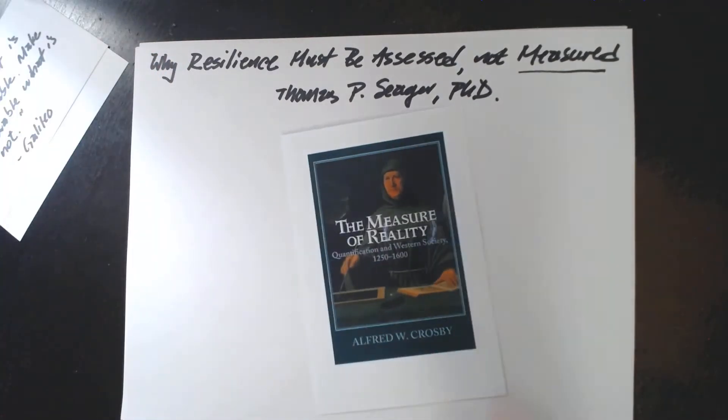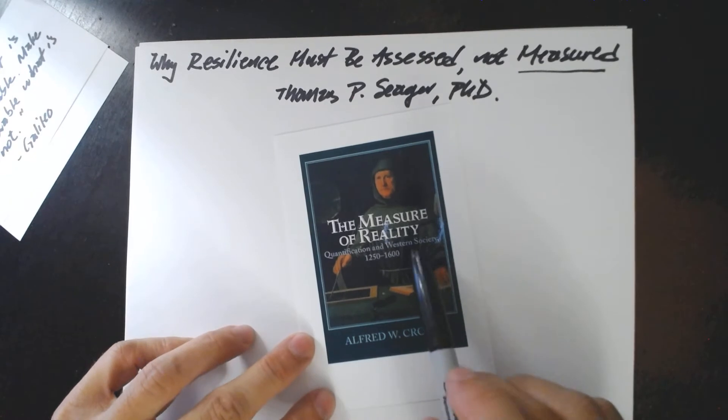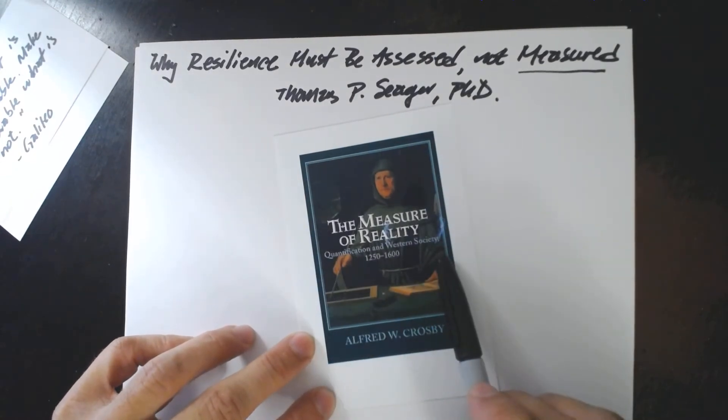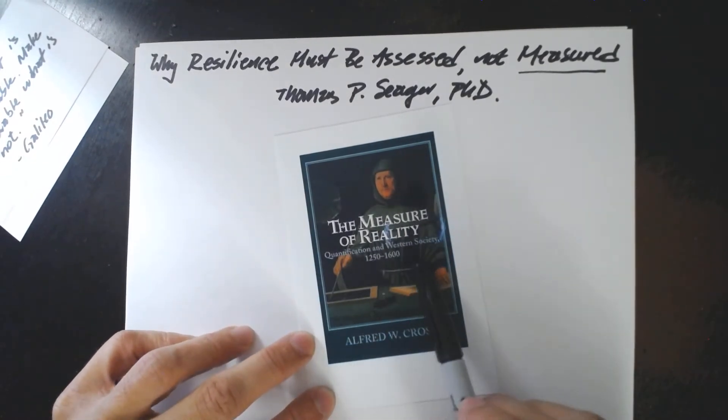Alfred Crosby gave us a wonderful book called The Measure of Reality. He took a historical look at this period before the Industrial Revolution in which scientists beginning in Italy and moving out across Europe were establishing norms of quantification.